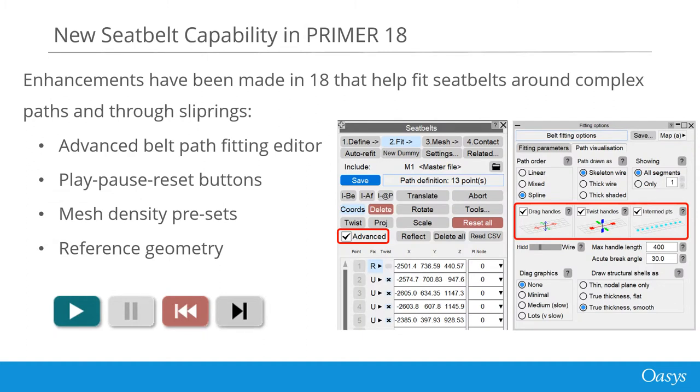There's now an advanced mode for path fitting that lets us drag and twist the belt in all directions. This enables fitting fabric seatbelts around child seats and through the slots in slip rings. We've redesigned the buttons to start, stop and reset the fitting process and added presets for commonly used mesh sizes.